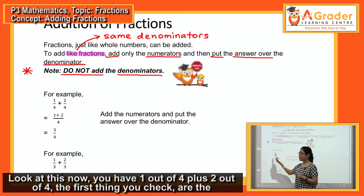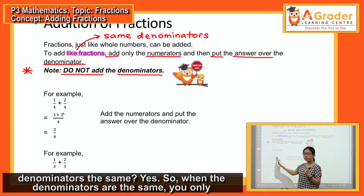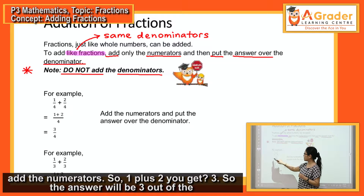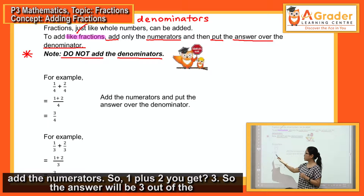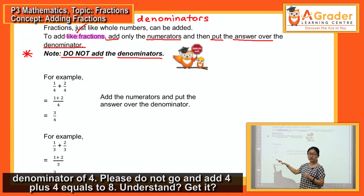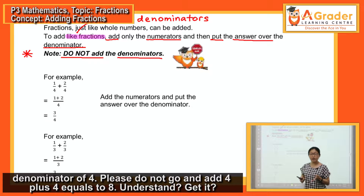Look at this now. You have one out of four plus two out of four. So the first thing you check: are the denominators the same? Yes. So when the denominators are the same, you only add the numerators. One plus two, you get three. The answer is three out of four. Please do not go and add four plus four to get eight.